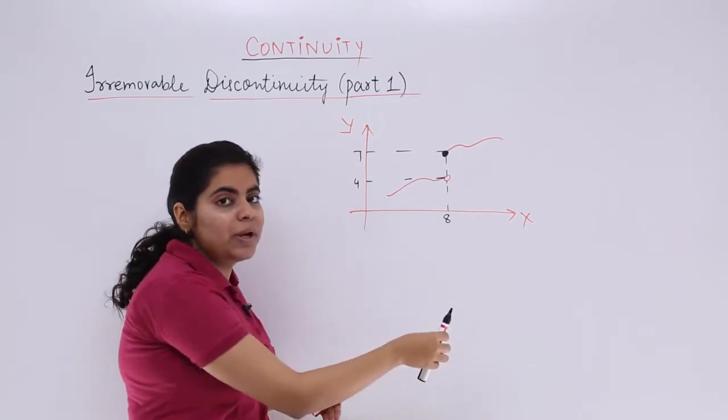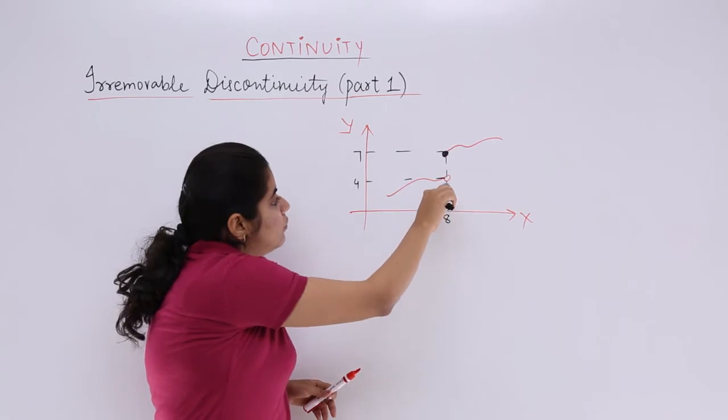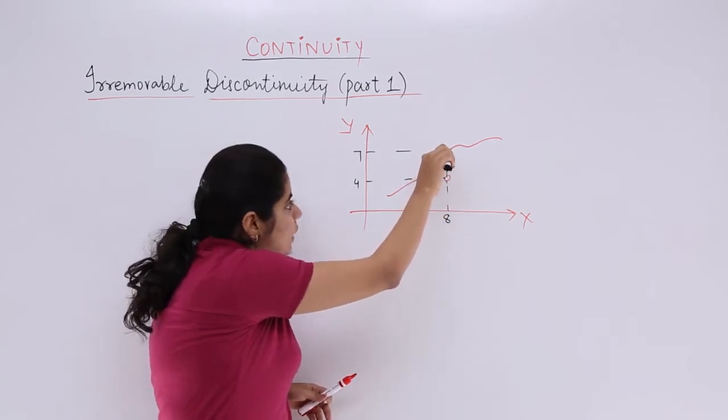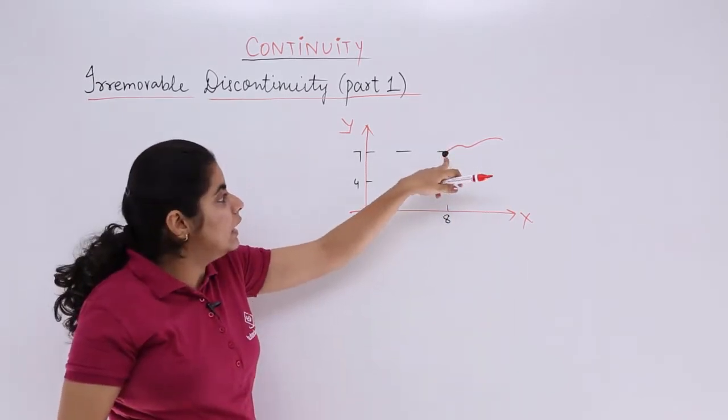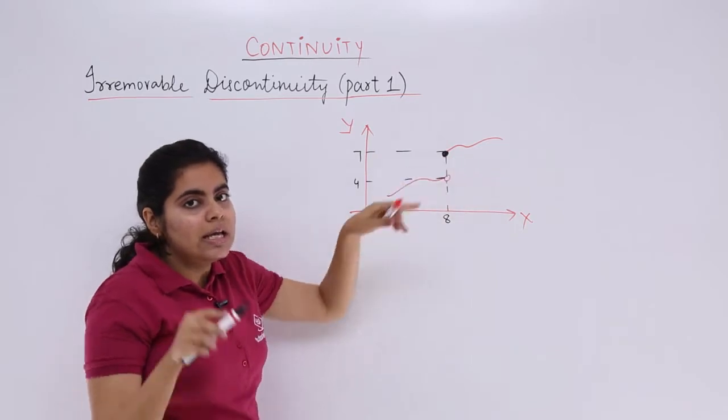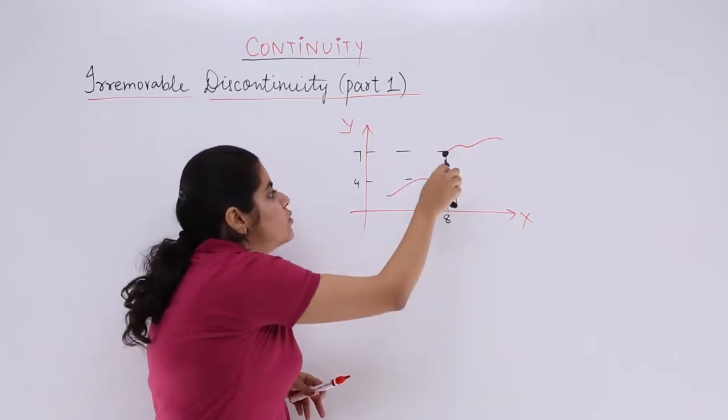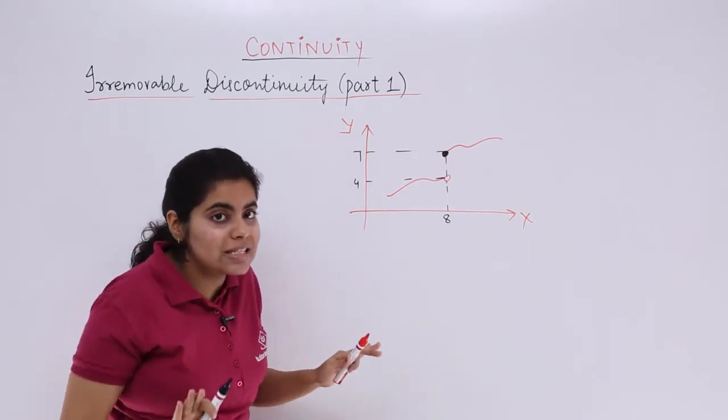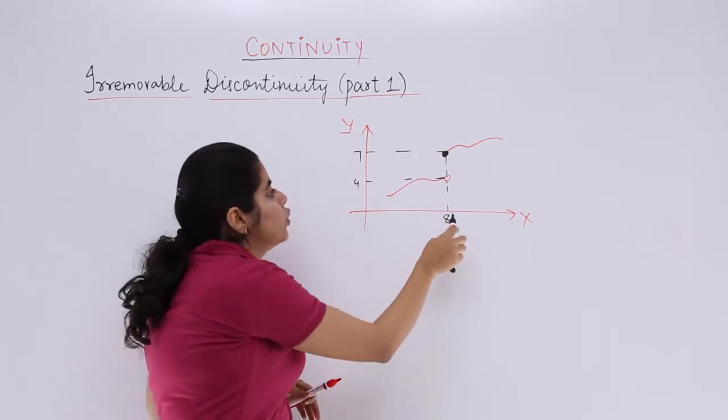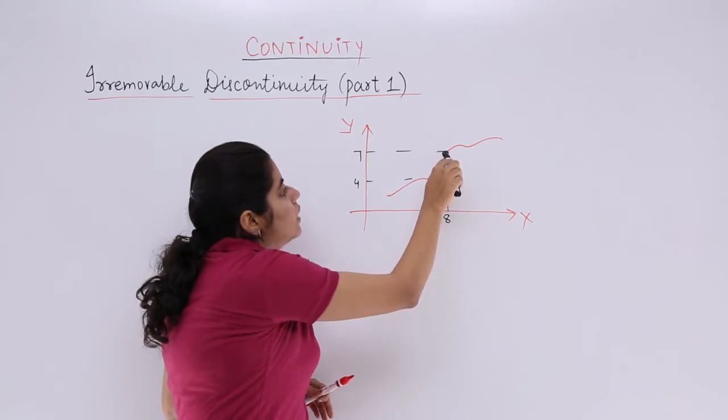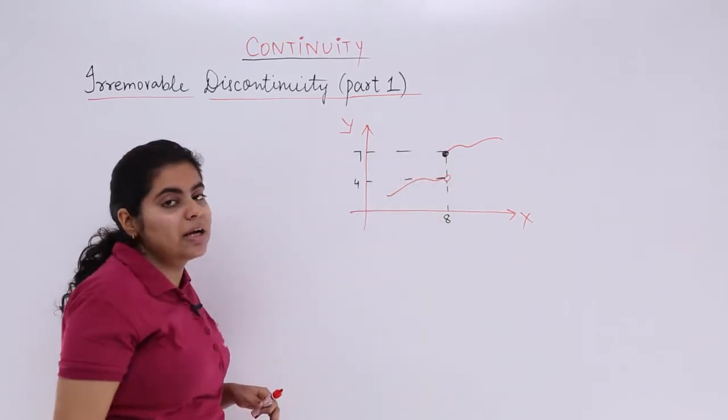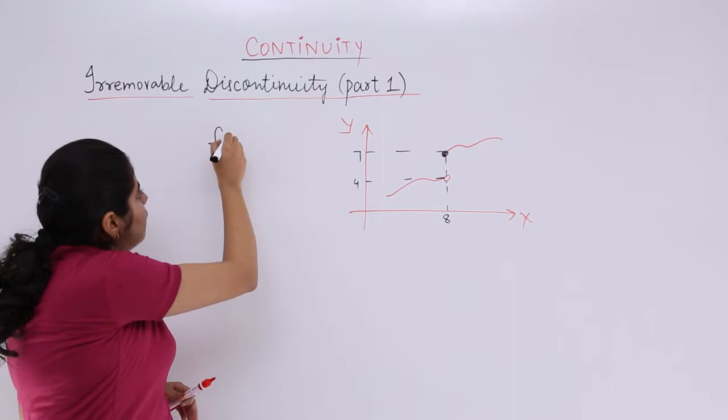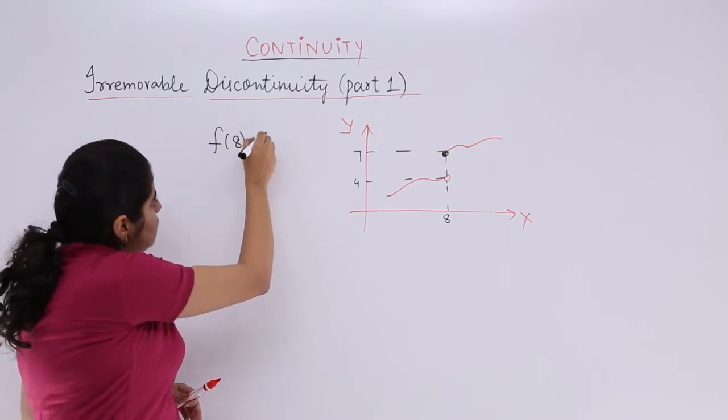You see this is x equals 8. You have to see the value of the function, you move up and then you intersect the curve here. It is not a hole. It is a solid dark symbol, right? So darkened symbol tells me that yes, the value of the function exists at x equals 8. You move upwards, you see it's already dark. You go to the other side, it becomes 7. So the value of f(8) is 7. You can determine it that way.